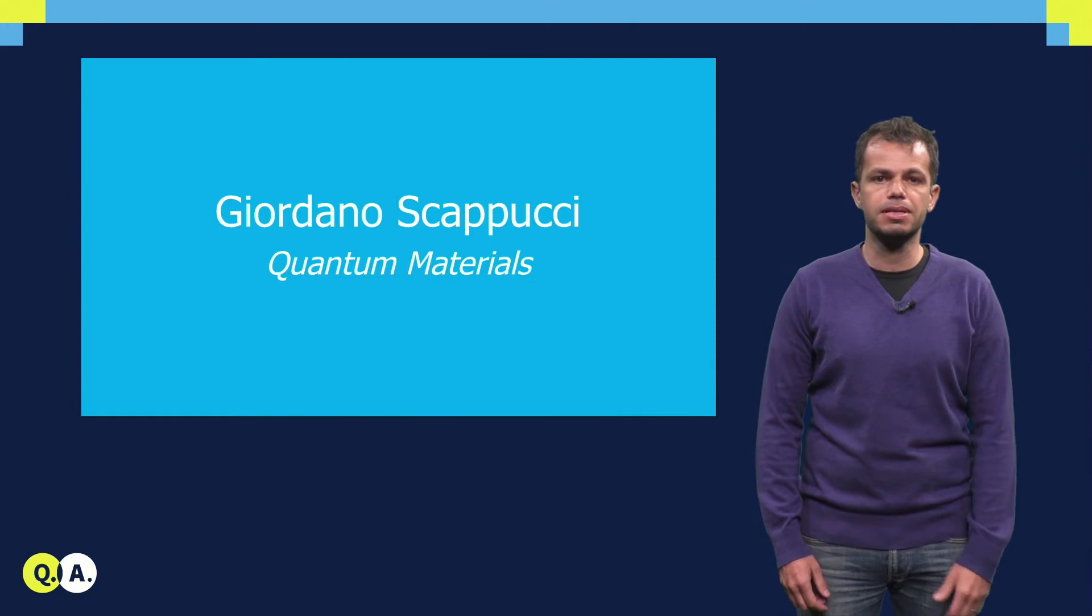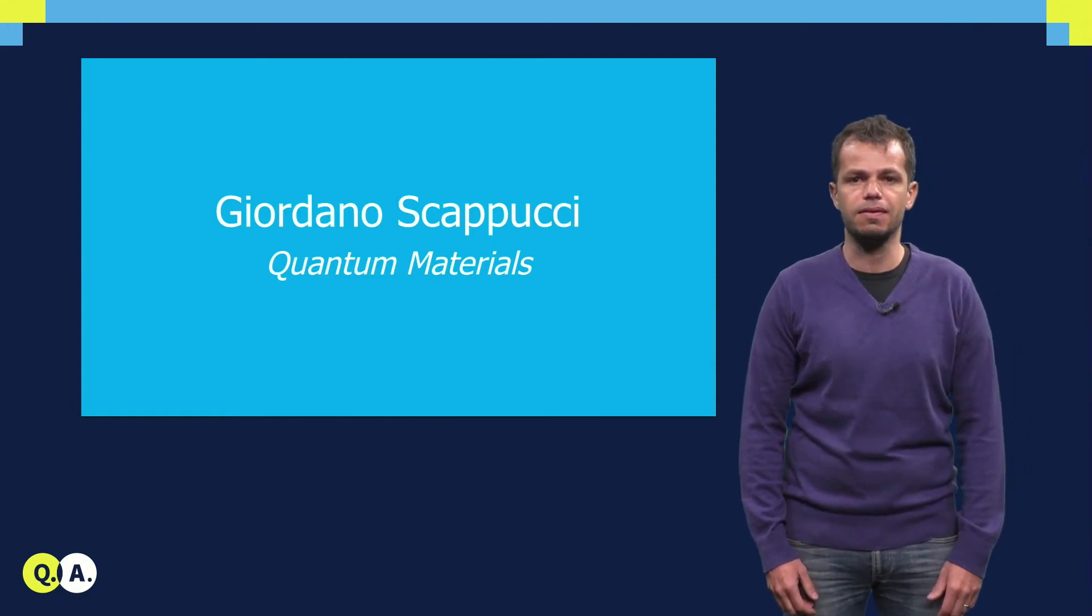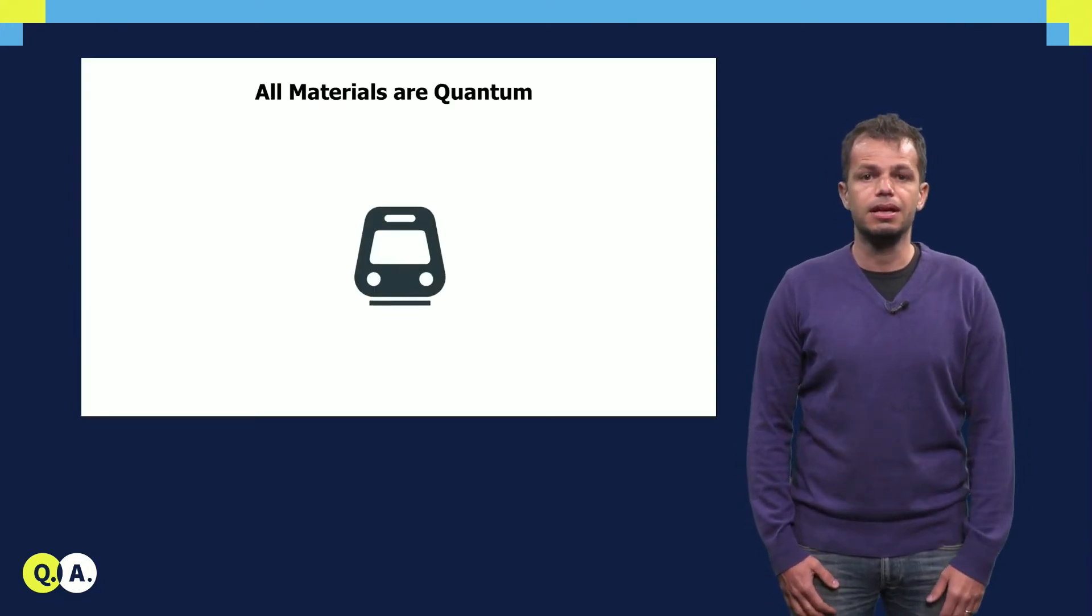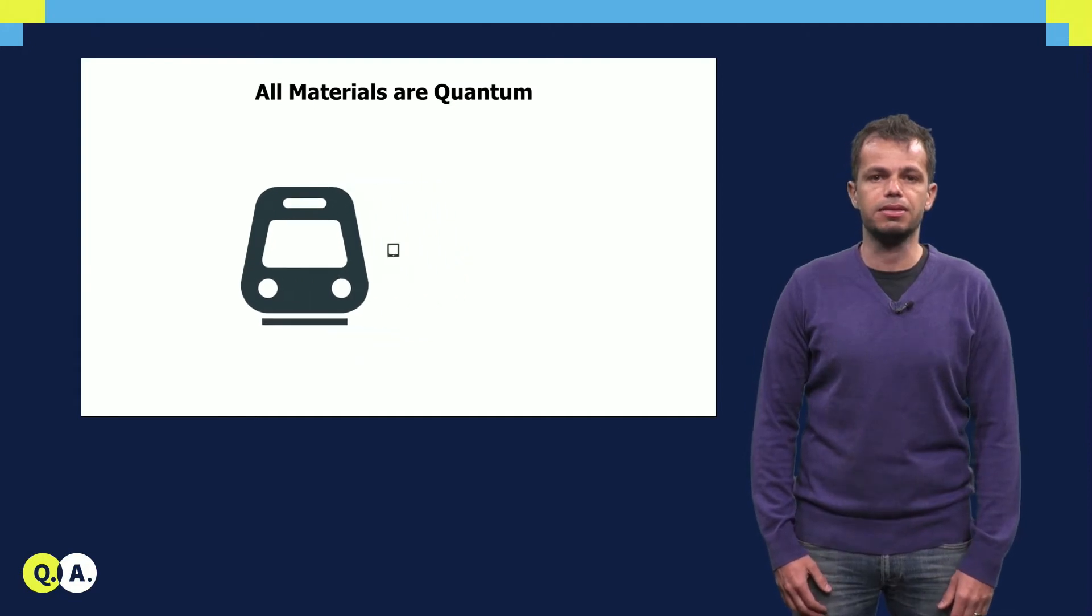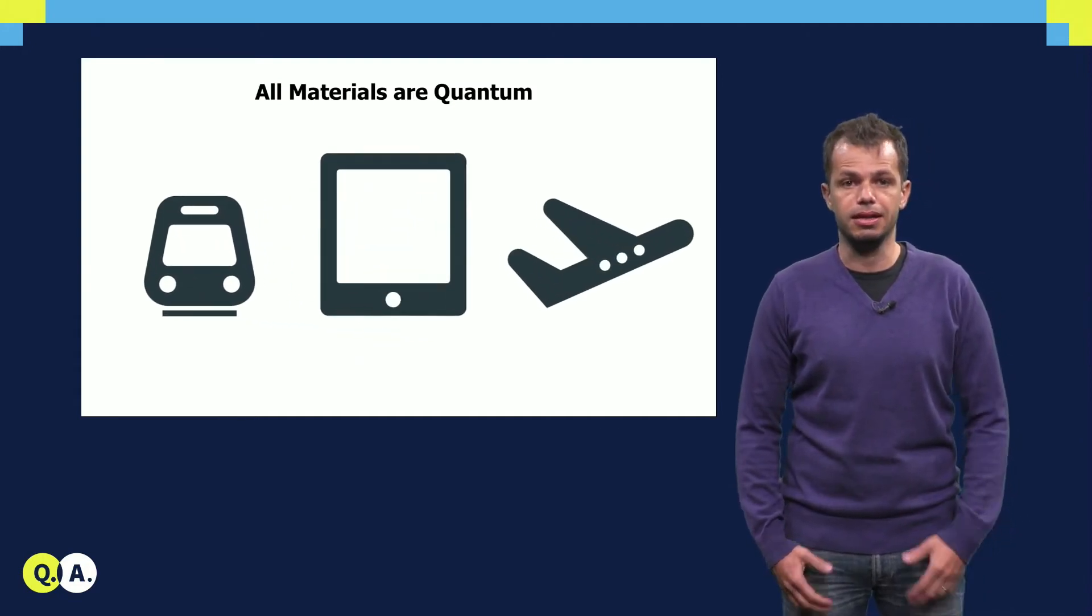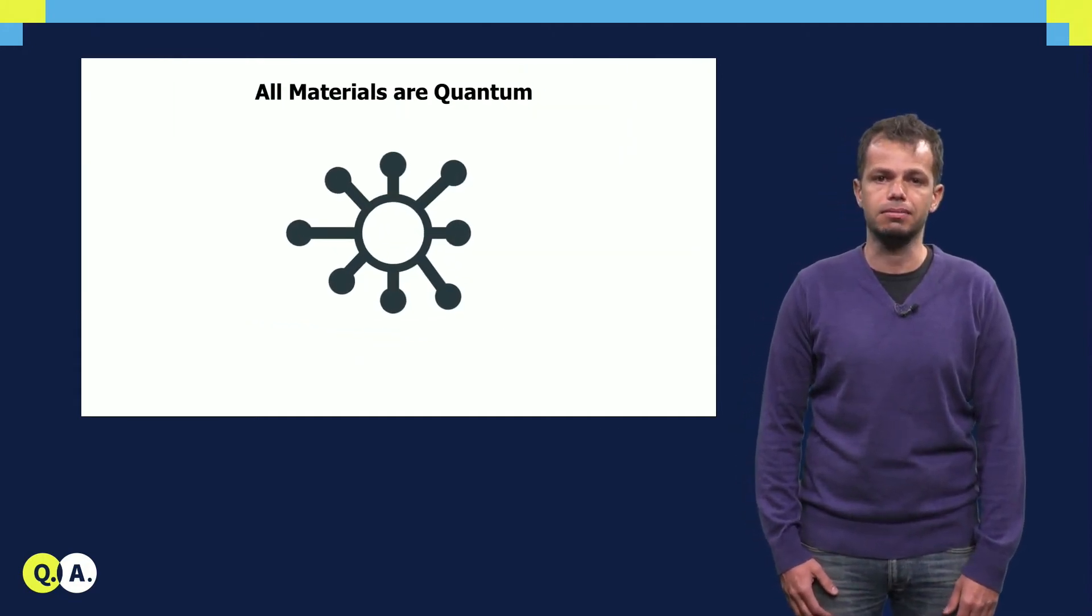Quantum mechanics describes how atoms bind and electrons interact at a fundamental level. Naively speaking, all materials are quantum because all matter, in the end, must be explained by quantum mechanics.